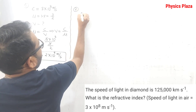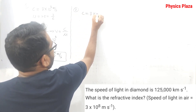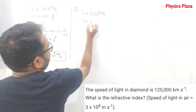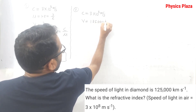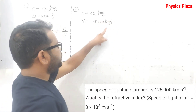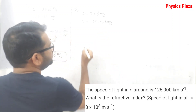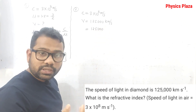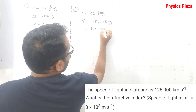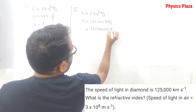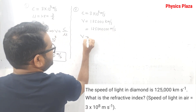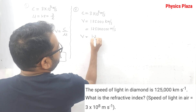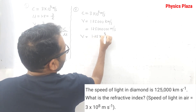In the second numerical, c = 3 × 10⁸ m/s and the speed of light in diamond is given as 1,25,000 km/s. Converting to meters: 1,25,000 km/s × 1000 = 1.25 × 10⁸ m/s. Now we need to calculate the refractive index using μ = c/v = 3 × 10⁸ / 1.25 × 10⁸. The 10⁸ terms cancel, giving a refractive index of approximately 2.4 for diamond.